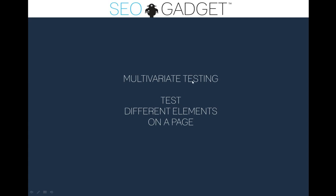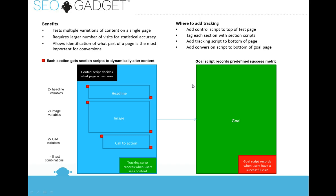We're testing these big, different designs. Multivariate testing is testing different elements on a page. Basically what we'll do is pick out maybe a headline, an image, and a call to action, and we'll test combinations of variations of those. So again we have a control script, and that control script will decide which variations people will see. Maybe we'll have two headline variables, two image variables, and two different calls to action — which creates eight possible combinations that a person can see. And the control script decides which of the combinations people will see.